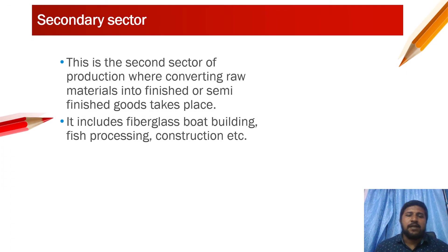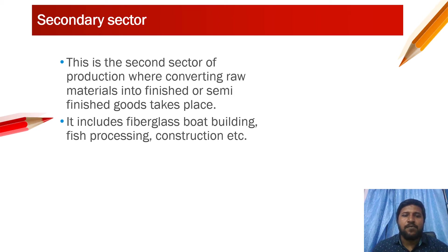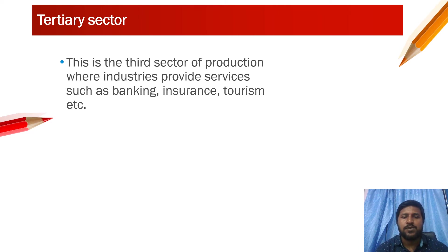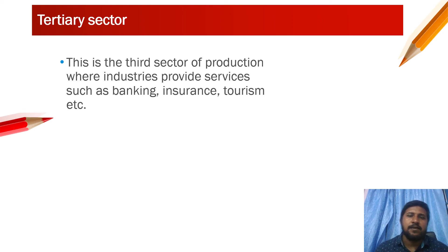The secondary sector is where extracted raw materials are converted into finished or semi-finished goods. Examples include fiberglass, board building, fish processing, and construction. The tertiary sector is where industries provide services such as banking, insurance, and tourism — distributing goods rather than producing raw materials.